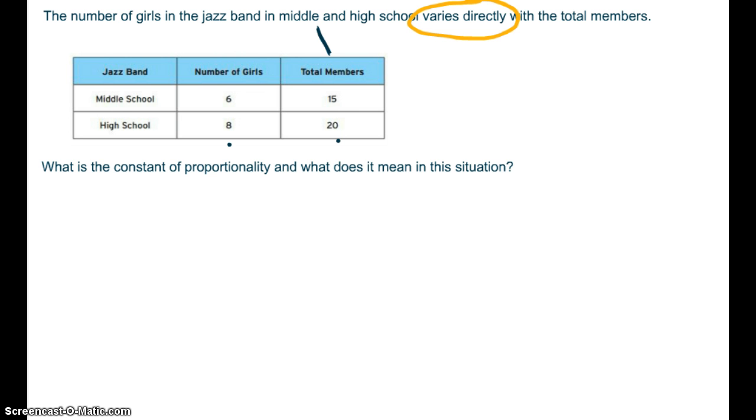The number of girls depends on the total number of members. So our X in this situation will be our total members. And our Y is going to be the number of girls. Because the number of girls depends on how many members are in the band.